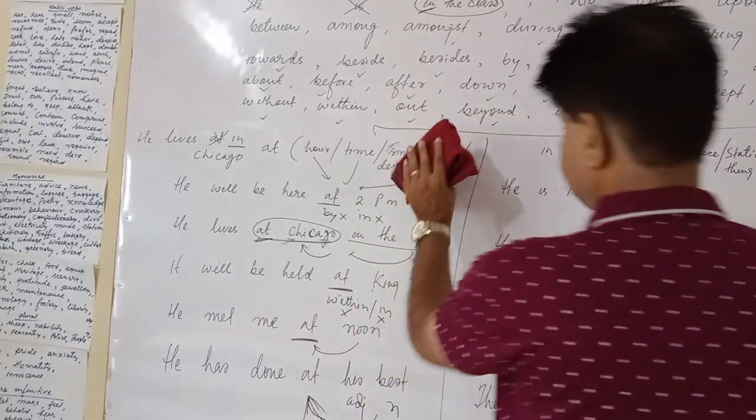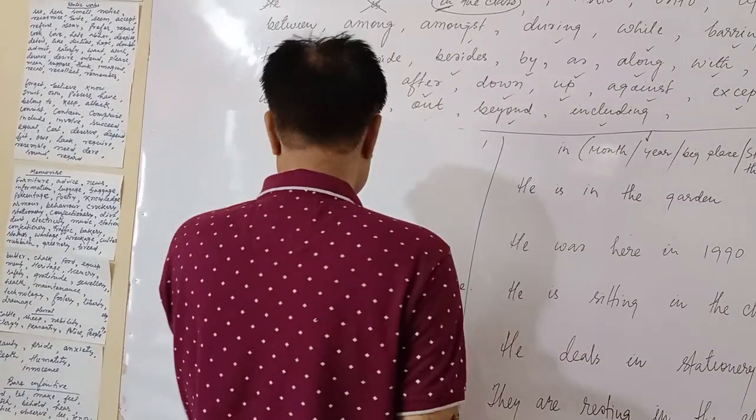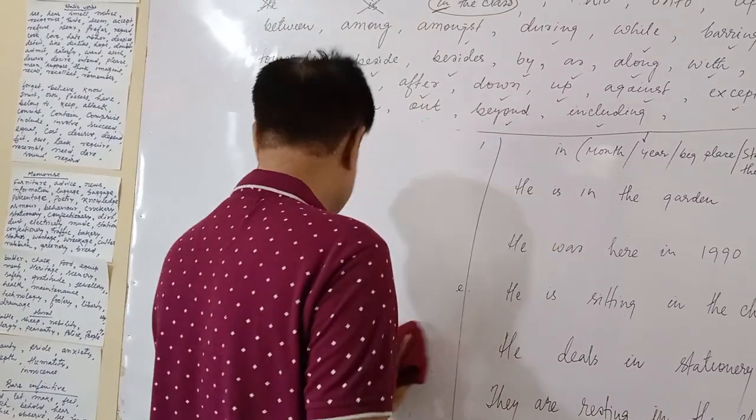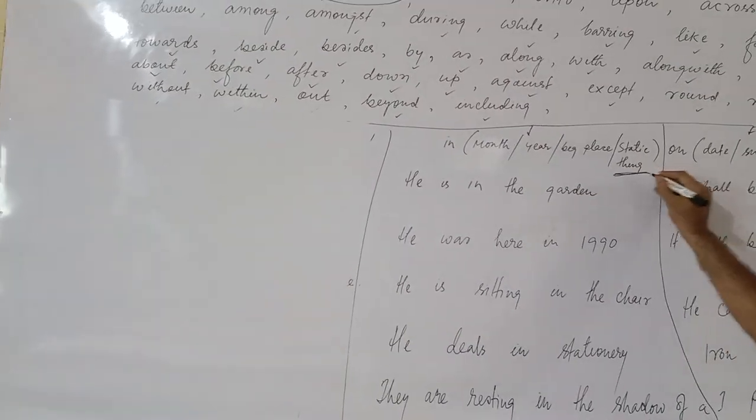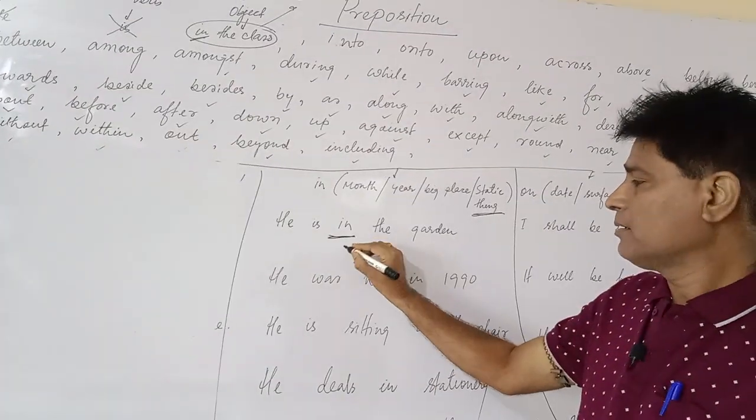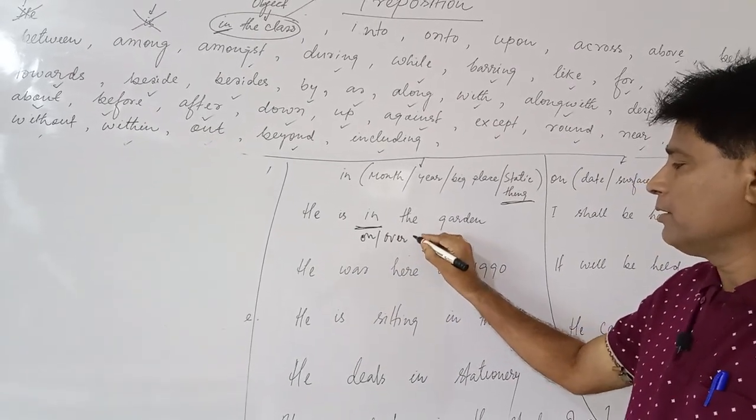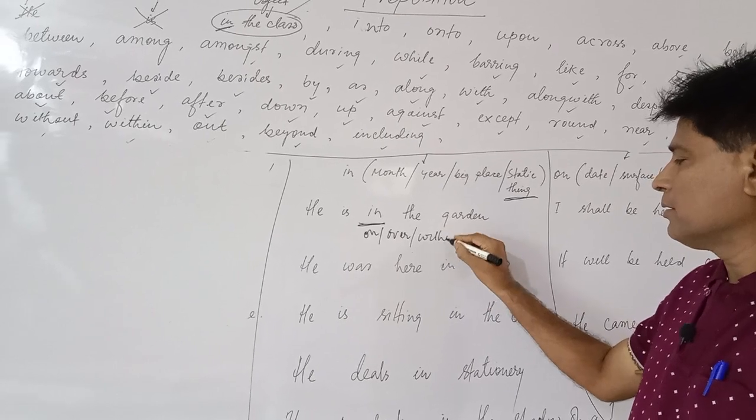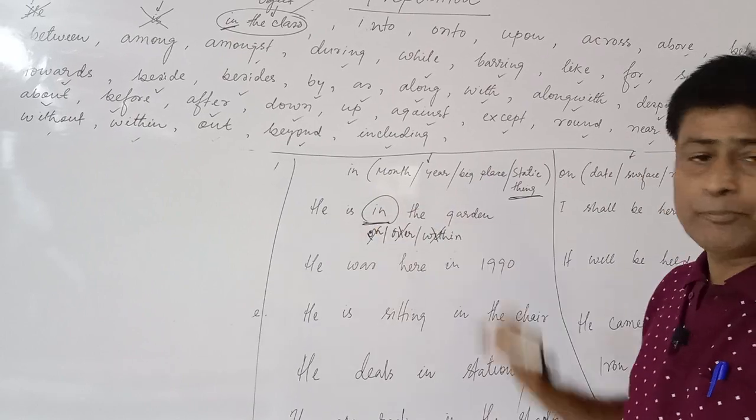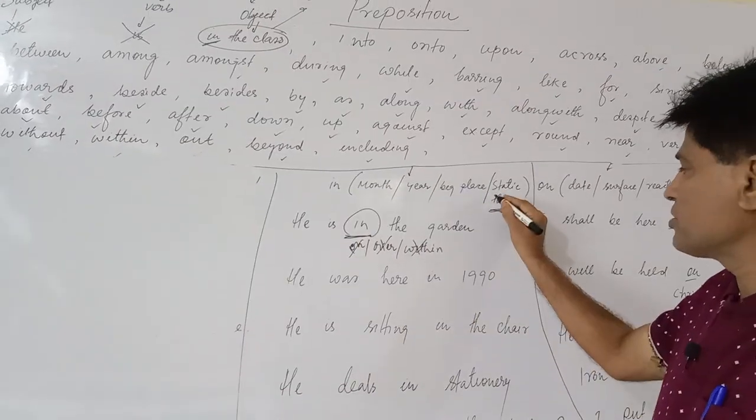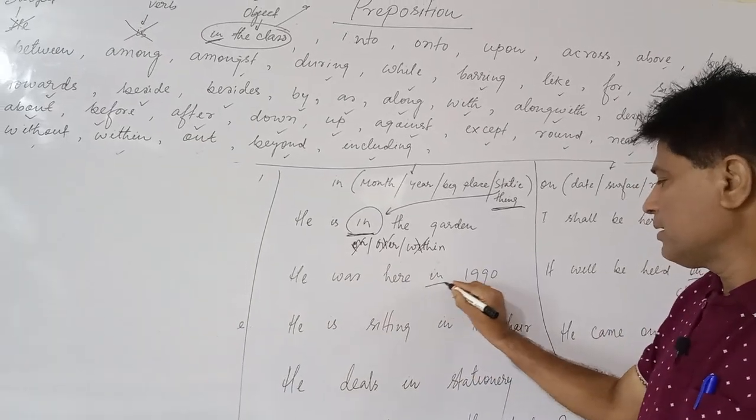Where to use in? In is used at the time when to denote month, year, big place and in any static things. He is in the garden, not he is on the garden, over the garden, or within the garden. These prepositions will be wrong for you. In will be only appropriate preposition because denoting static sense over here. He was here in 1990, that defines year.